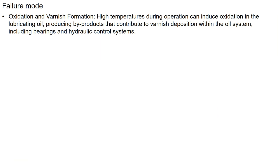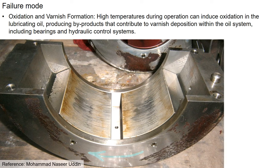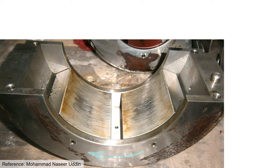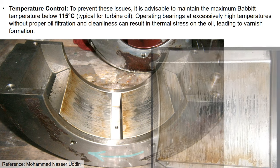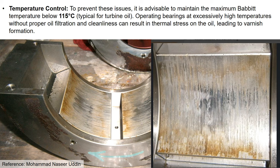Here is a good example. High temperature operation can induce varnish deposition within the bearing and the hydraulic control systems. To prevent these issues, it is advisable to maintain the maximum Babbitt temperature below 115 degrees Celsius. Operating bearings at excessively high temperatures without proper oil filtration can result in thermal stress on the oil, leading to varnish formation.